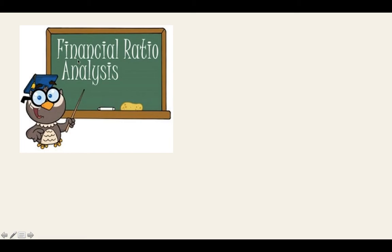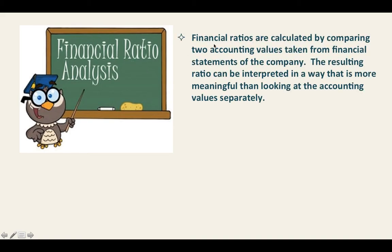Financial ratios are calculated by comparing two accounting values taken from financial statements of the company. Take note: two accounting values — we are comparing one value with another, and those values are taken from financial statements, which could mean comparing values between the income statement and the statement of financial position. The resulting ratio can be interpreted in a way that is more meaningful than looking at the accounting values separately.